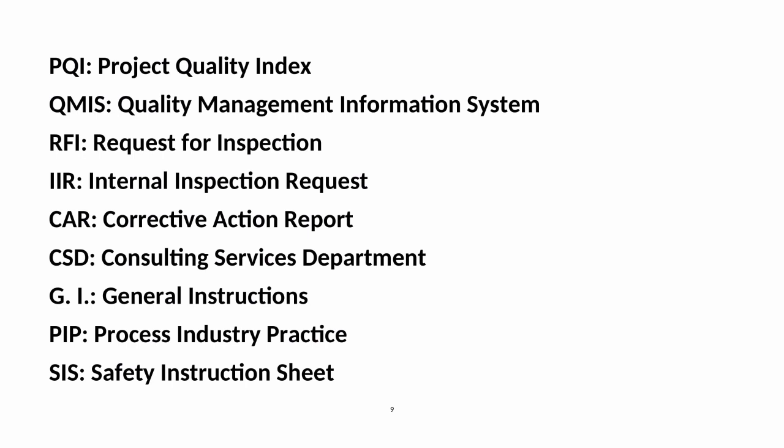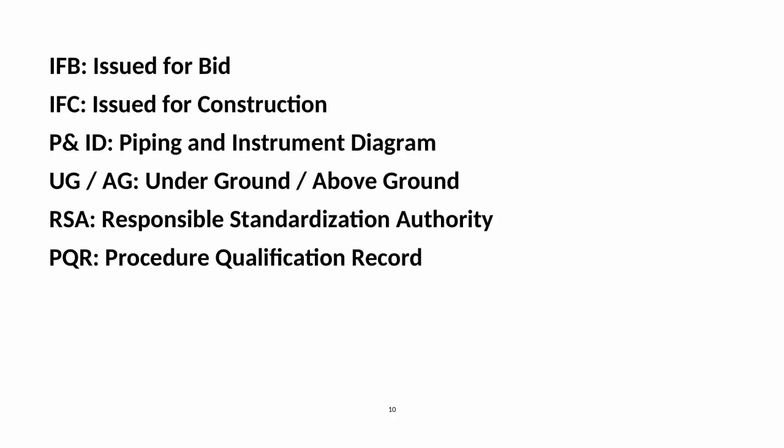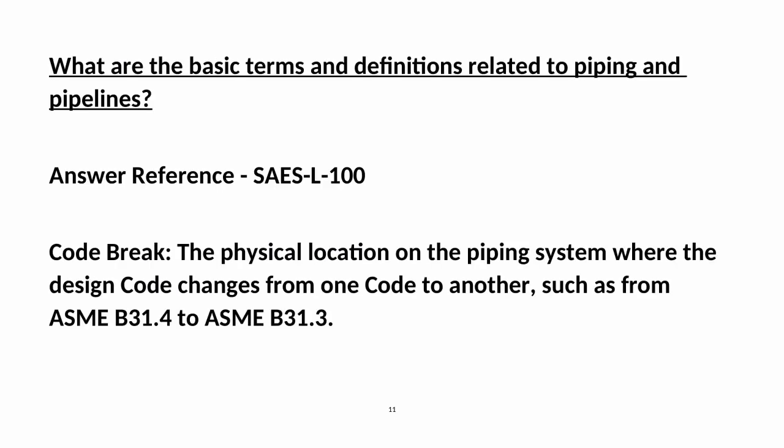Additional abbreviations: CIS — Safety Instruction Sheet; IFB — Issued for Bid; IFC — Issued for Construction; P&ID — Piping and Instrument Diagram; UG — Underground; AG — Above Ground; RSA — Responsible Standardization Authority; PQR — Procedure Qualification Record.